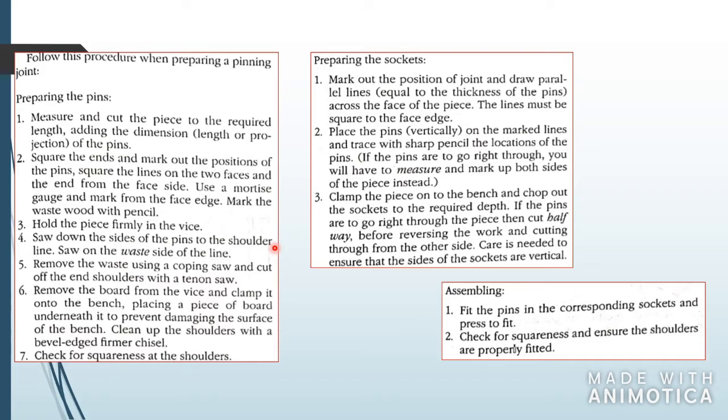Hold the pieces firmly in the vise and saw down the sides of the board. Remove the waste using a coping saw or band saw, and cut off the end shoulders. Check for squareness using your square and mark out the positions of all the joints you're going to cut or chisel out. Marking out is very important when doing these types of assemblies.